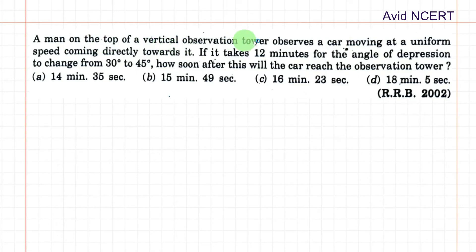A man on the top of a vertical observation tower observes a car moving at a uniform speed coming directly towards it. If it takes 12 minutes for the angle of depression to change from 30 degrees to 45 degrees, how soon after this will the car reach the observation tower?